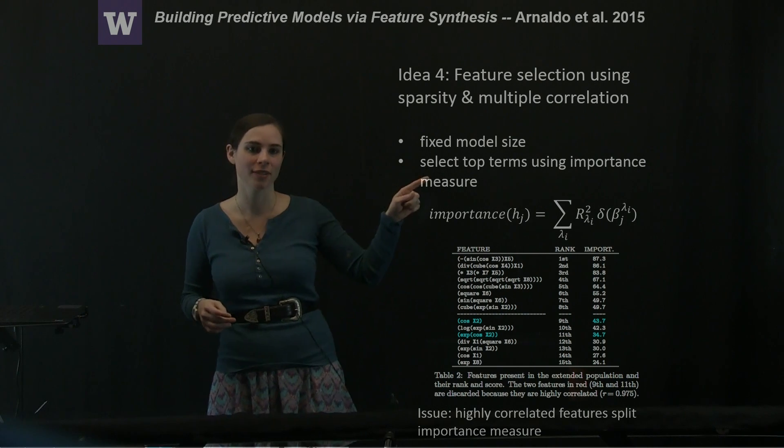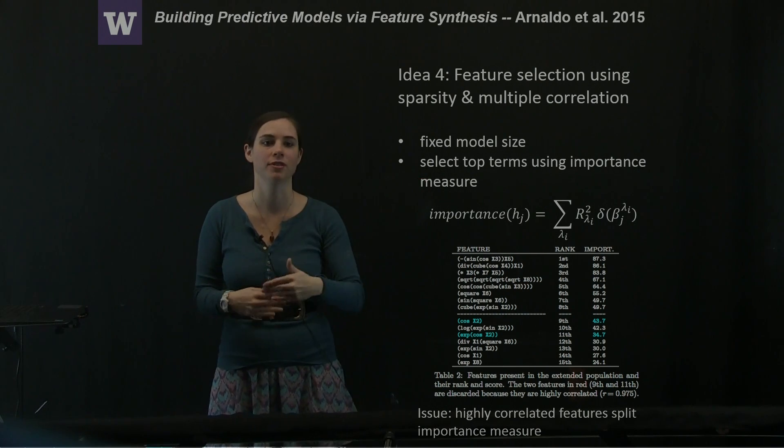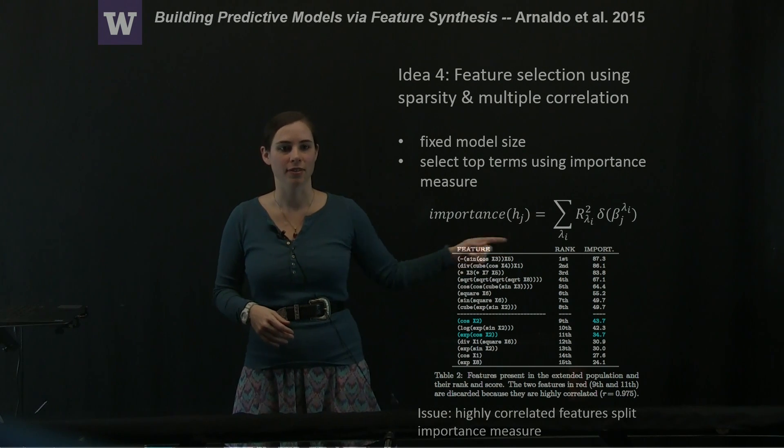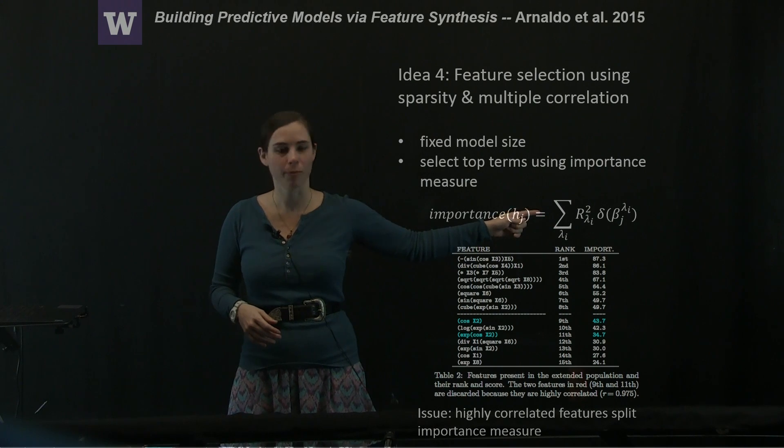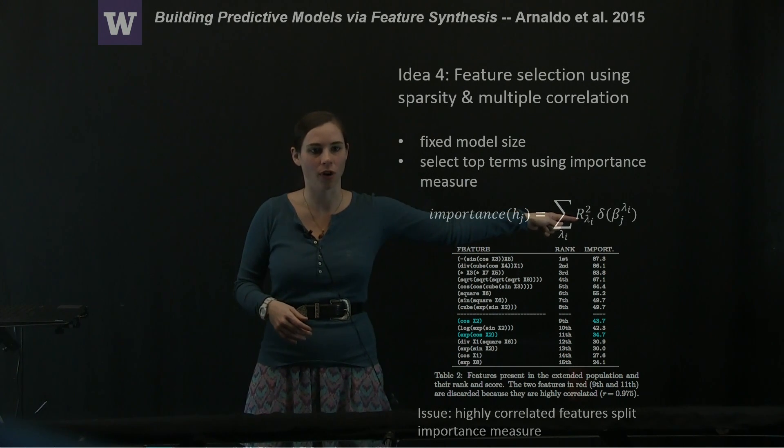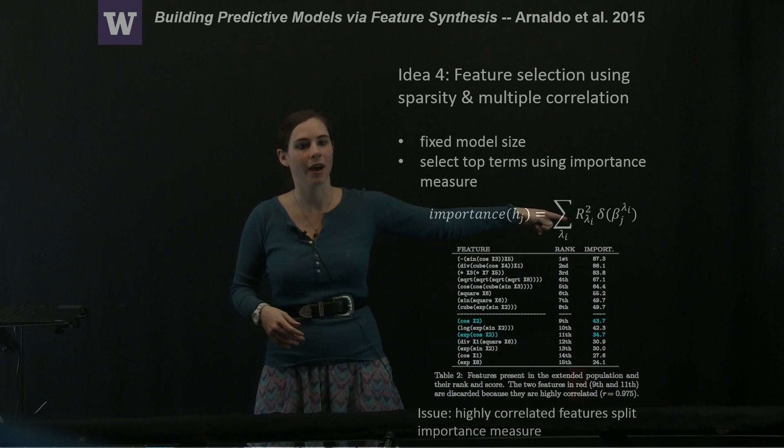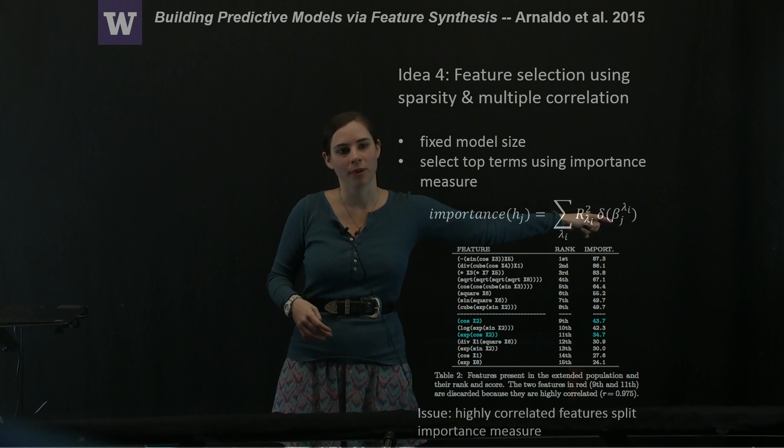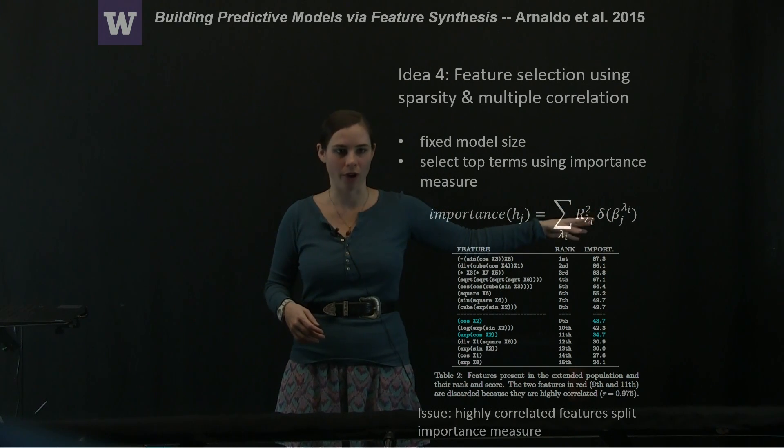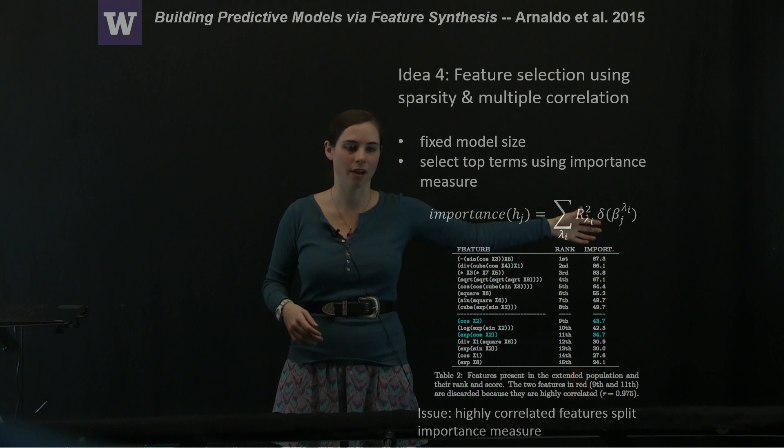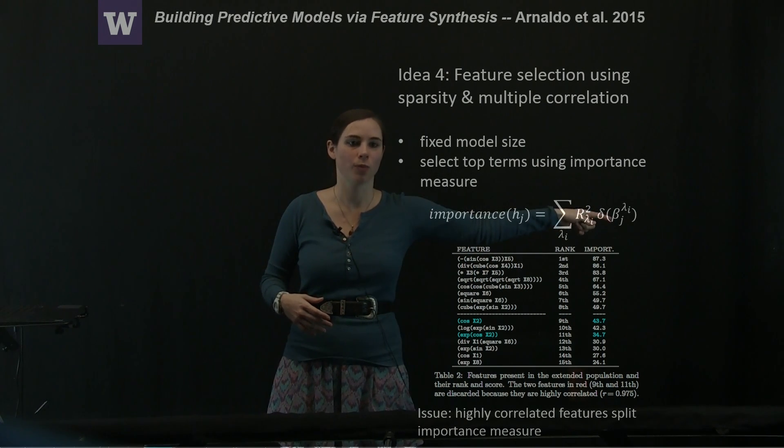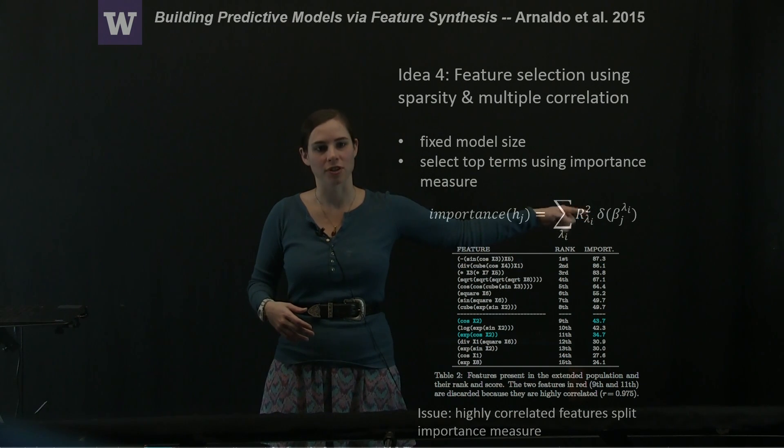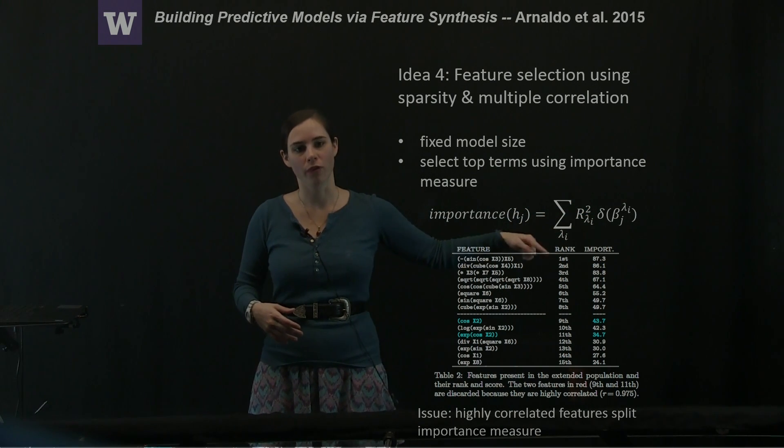So they use a fixed model size, and they select only the top terms using an importance measure. And this importance measure is defined as the sum of the multiple correlation coefficient, so that's R, times basically whether or not the beta for that lambda value is zero or not. So if it's zero, then the term does not contribute. If beta is non-zero, then the multiple correlation coefficient does contribute, and it's the sum over all of lambda.